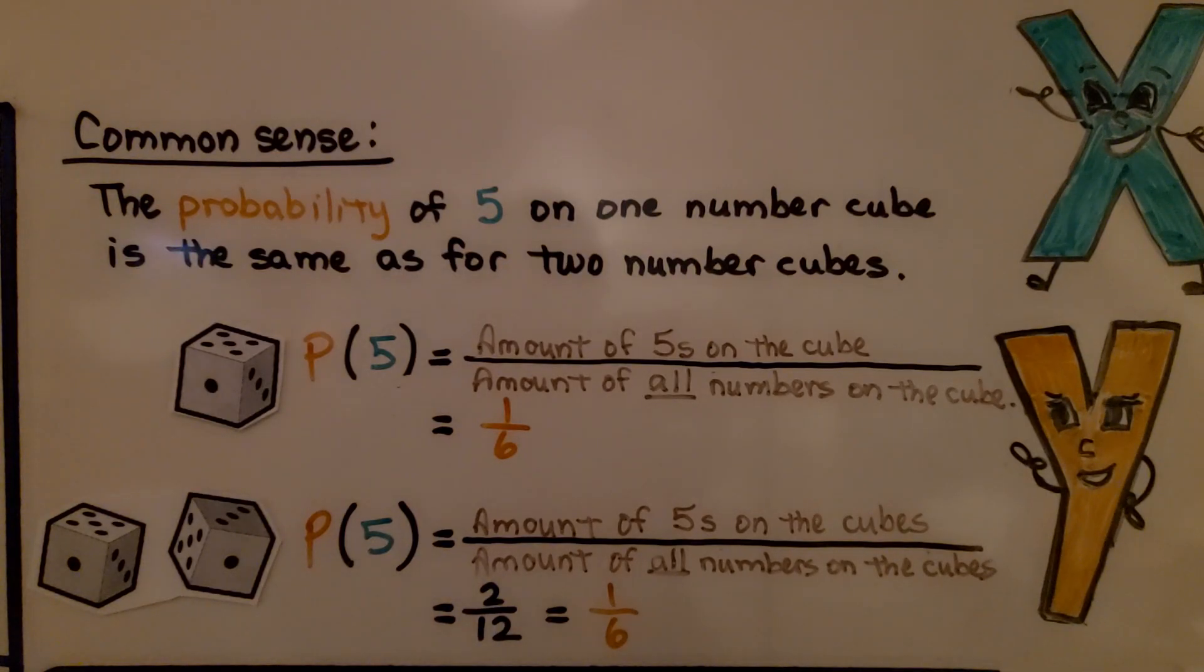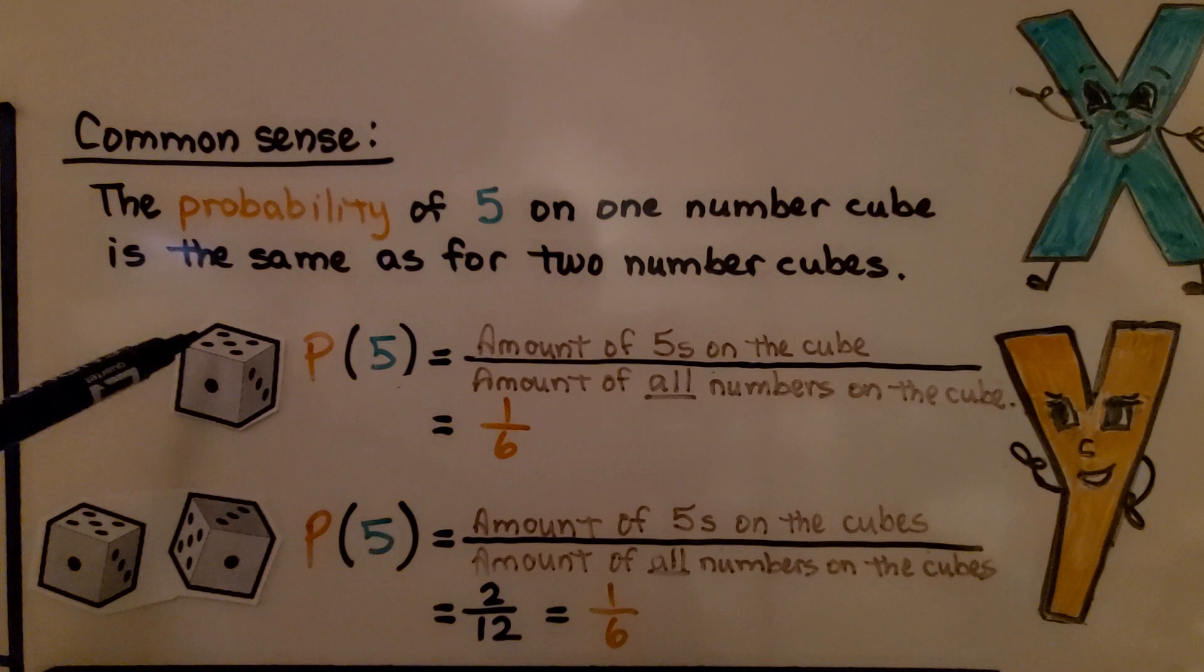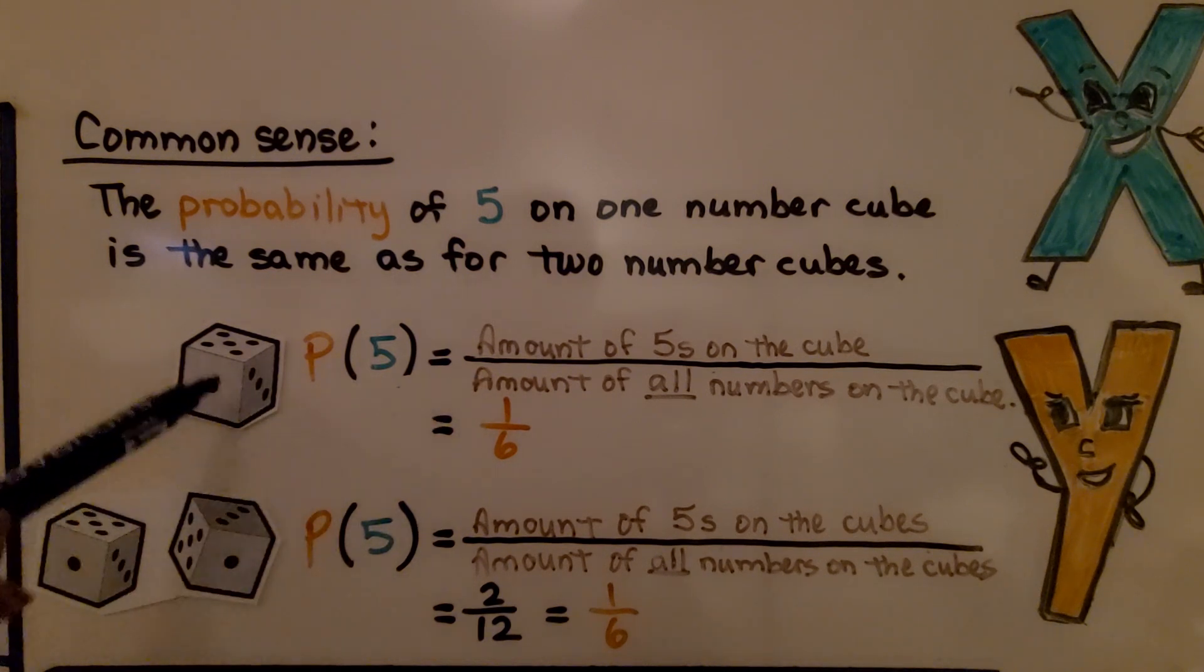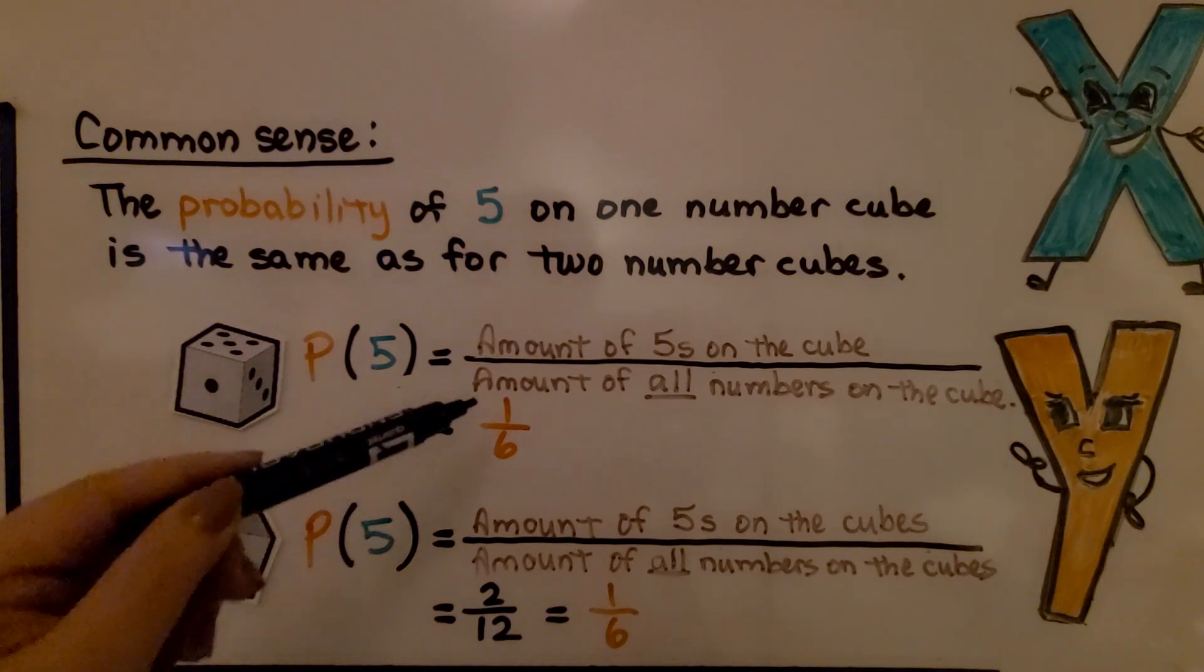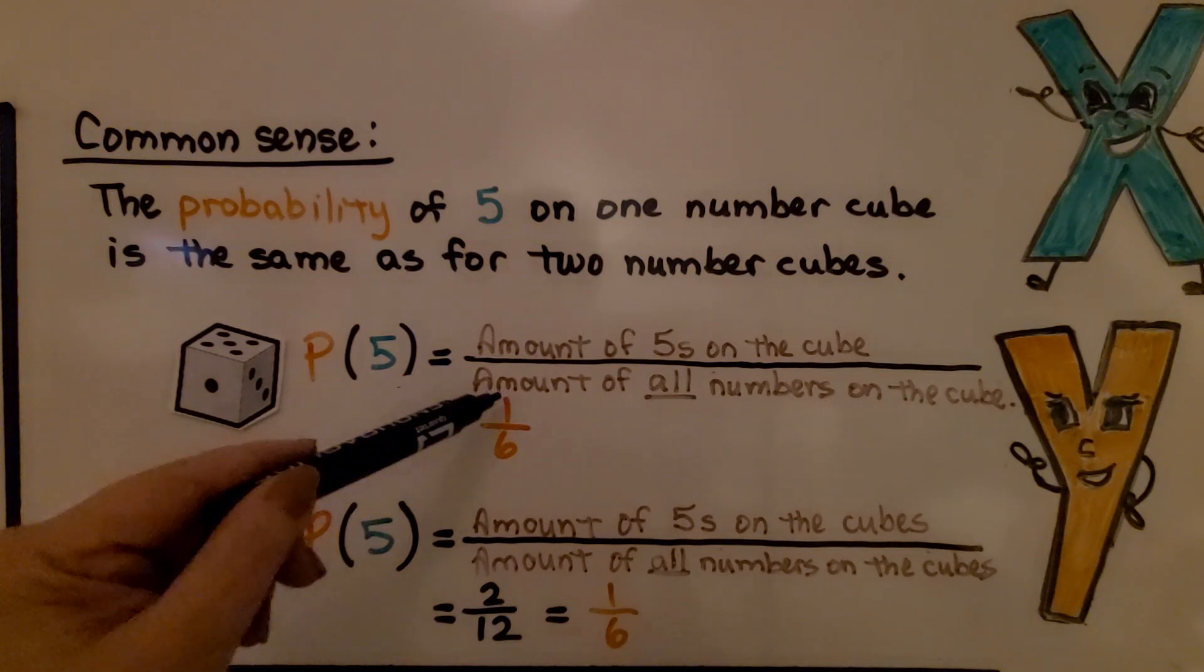So let's finish the lesson with a little common sense. The probability of five on one number cube is the same as for two number cubes. The probability of rolling a five is the amount of fives that are on the cube over the amount of all the numbers on the cube. There's one five on the cube. There's six numbers in all. That would be 1/6.